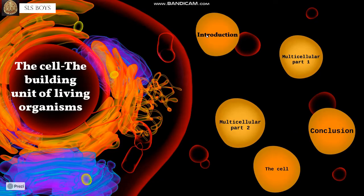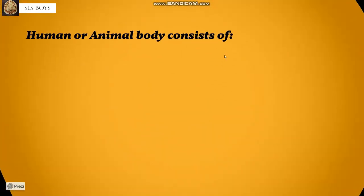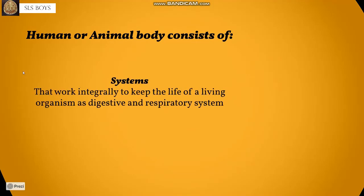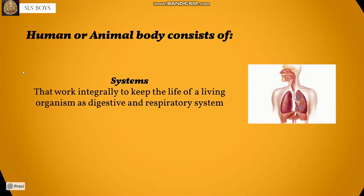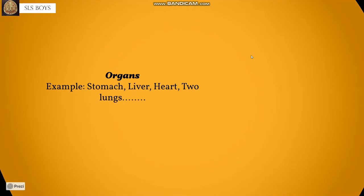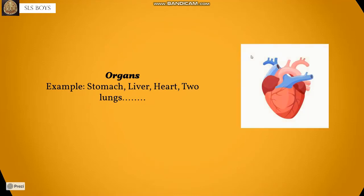Let's study multicellular organisms first. The human or animal body consists of systems that work integrally to keep the organism alive — such as the digestive and respiratory systems. These systems consist of organs like the stomach, liver, heart, or lungs.